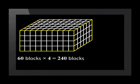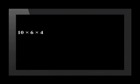Since the box is four centimetres high, it means that we can fit four layers of sixty blocks in the box. This will make four multiplied by sixty blocks, which equals two hundred and forty blocks. We took ten blocks for the length and multiplied it by six blocks for the width and then multiplied it by four blocks for the height to give two hundred and forty blocks in all. We say that the volume of our box is two hundred and forty cubic centimetres.